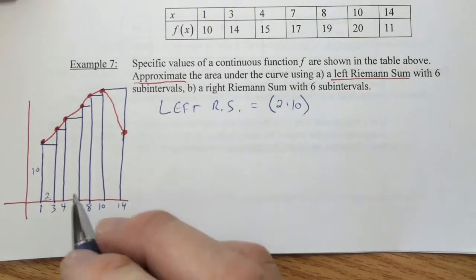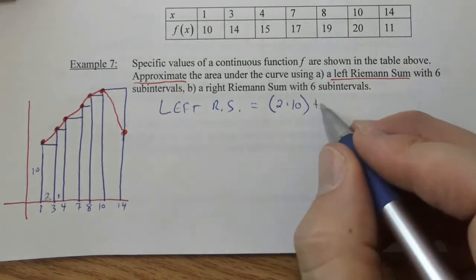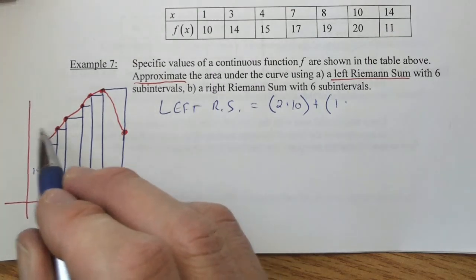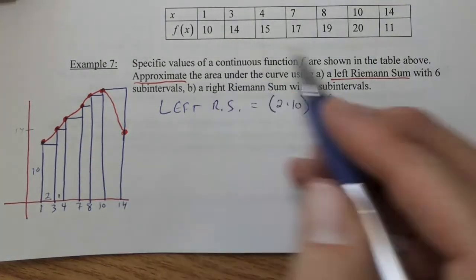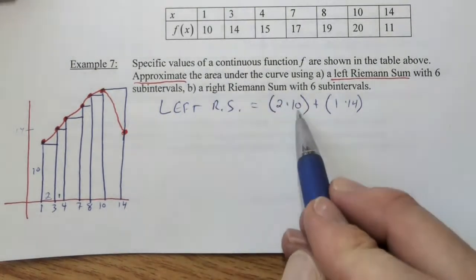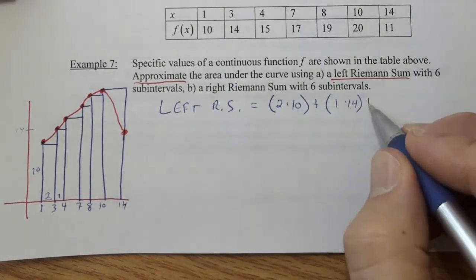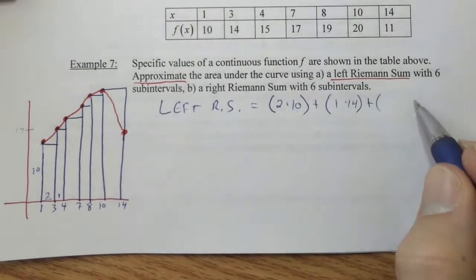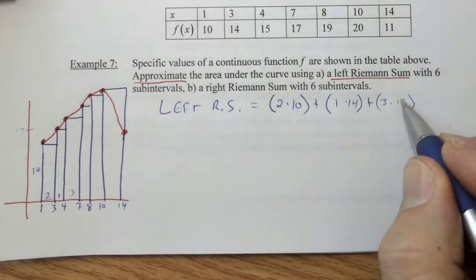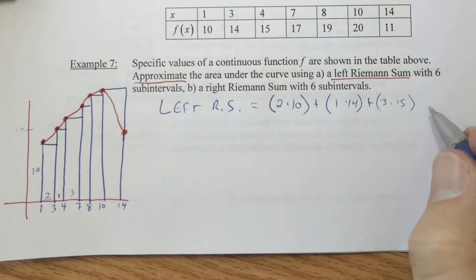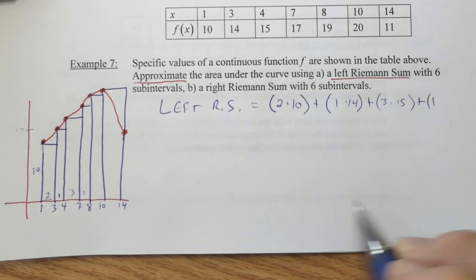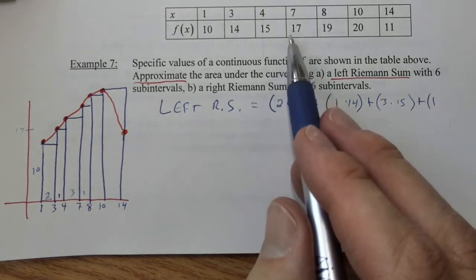The first time we use the ten, the second time we use the fourteen, for our third rectangle we're going to use the fifteen. And we're going from four to seven, so that's a change of three, so we have three times fifteen. Our next rectangle, we go from seven to eight, so that's a change of one, and our height will be the next Y value, which is seventeen.